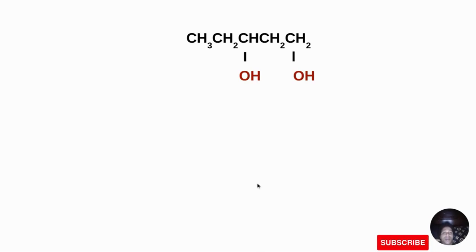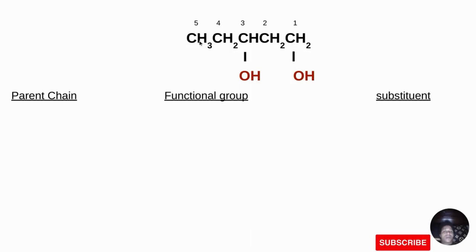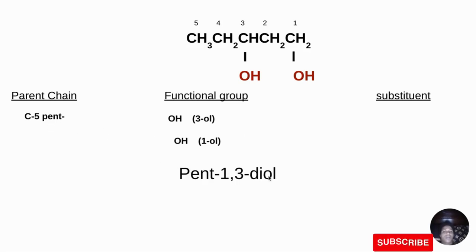For the next example, we are given CH3-CH2-CH-CH2-CH2 with two OH groups. The parent chain is the straight chain with 5 carbons, so it is 'pent'. Counting from the end closest to an OH, we have '1-ol' and '3-ol'. There is no substituent. Since we have two OH groups, we use the prefix 'di'. The name of the compound is pent-1,3-diol.